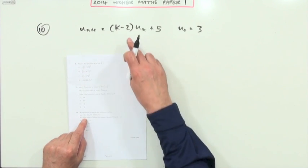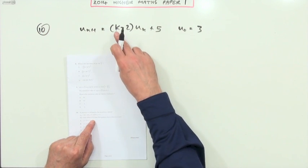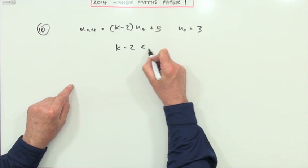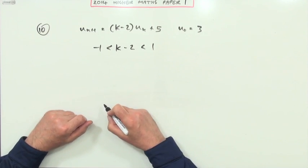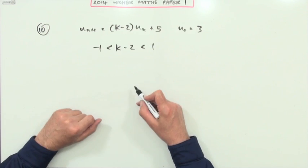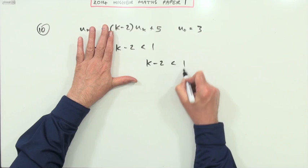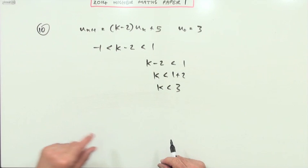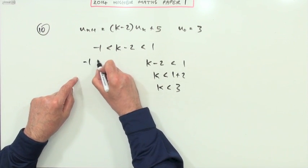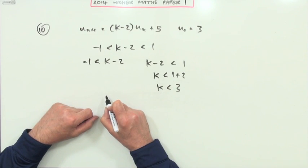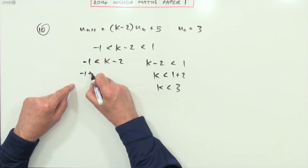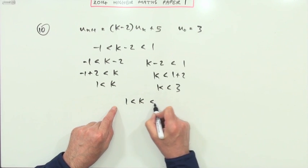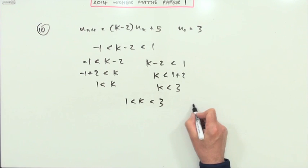Number 10: geometric series/limit reconciliation again, but this time it asks for the value of k for the limit to exist. The factor (k - 2) must be a proper fraction between one and negative one. That gives two inequalities: k minus two is less than one, so k is less than three; and negative one is less than k minus two, so one is less than k. Put those together: k is between one and three. Answer C.